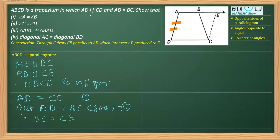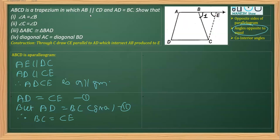Now that we have proved BC is equal to CE, we use the triangle property: in a triangle, if two sides are equal, then the angles opposite to those sides are equal. Let me label this angle as angle 1. So we can write angle 1 is equal to angle E, and the reason is angles opposite to equal sides are equal.